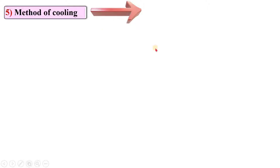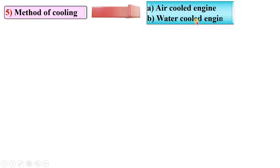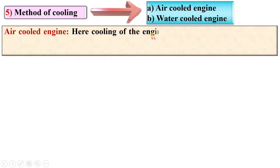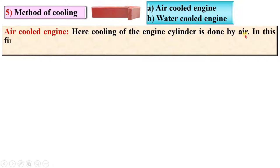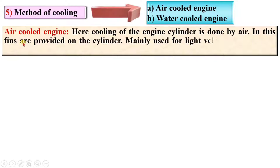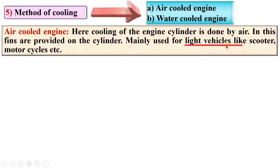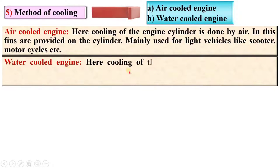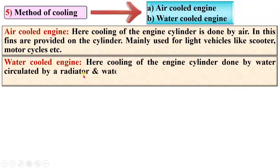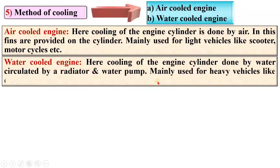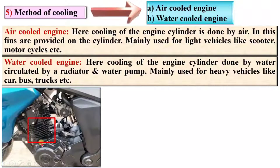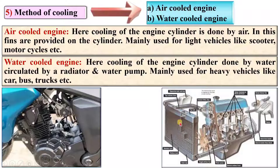According to the method of cooling, IC engines are classified as air-cooled engines and water-cooled engines. In air-cooled engines, cooling of the engine cylinder is done by air — fins are provided on the cylinder, and they are mainly used for light vehicles like scooters and motorcycles. In water-cooled engines, cooling is done by water circulated by a radiator and water pump, and they are mainly used for heavy vehicles like cars, buses, and trucks.